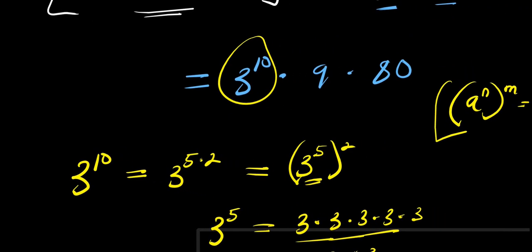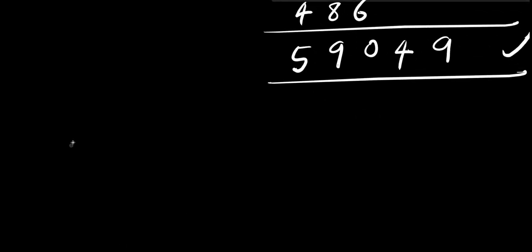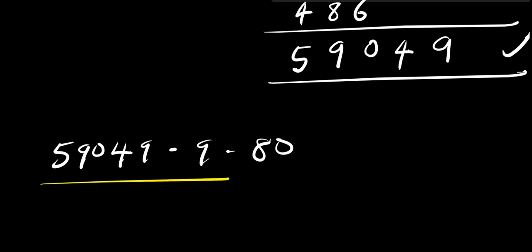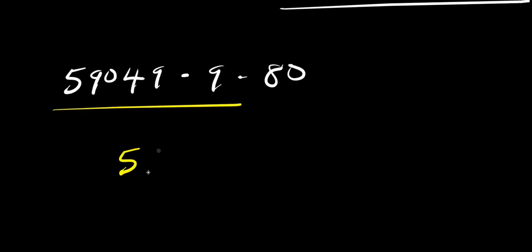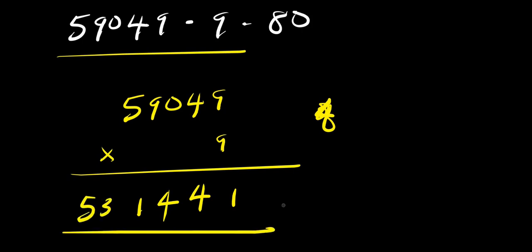We have the value of 3 to the power of 10, which is 59,049. We need to multiply that by 9 and by 18 — wait, we multiply by 9 (which is 3 squared) and then by 80. So first: 59,049 times 9. Working through: 9 × 9 = 81 (write 1 carry 8), 9 × 4 = 36 plus 8 = 44 (write 4 carry 4), 9 × 0 = 0 plus 4 = 4, 9 × 9 = 81 (write 1 carry 8), 9 × 5 = 45 plus 8 = 53. So 59,049 × 9 = 531,441.